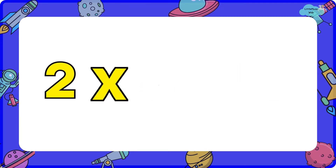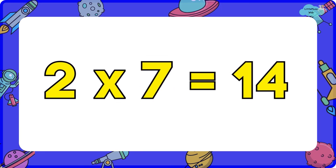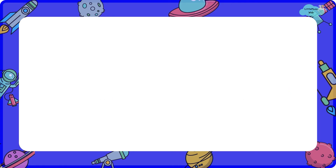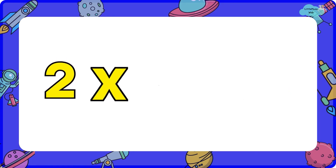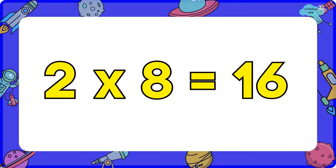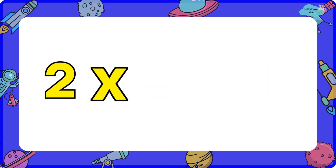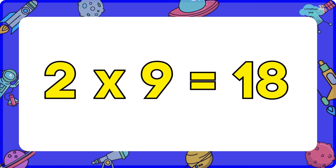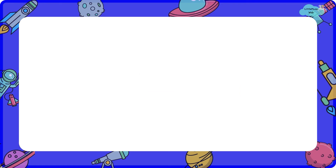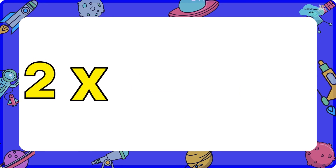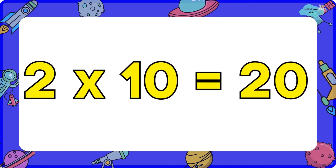Two sevens are fourteen. Two eights are sixteen. Two nines are eighteen. Two tens are twenty.